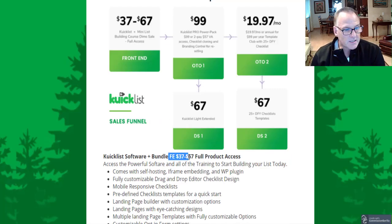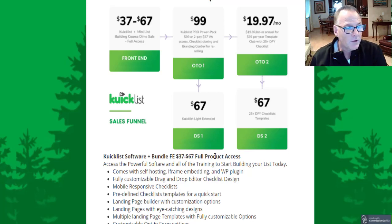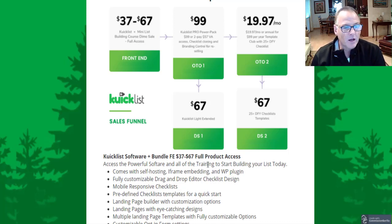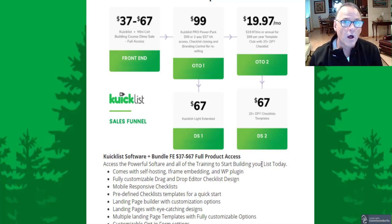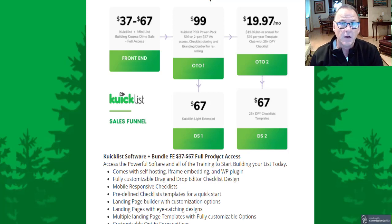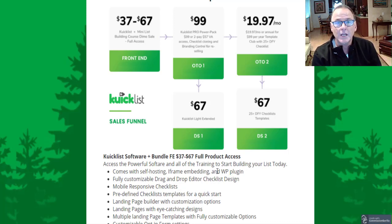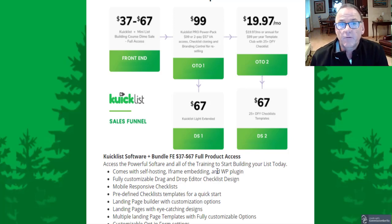The front end of Quicklist is $37 to $67 depending on when you pick it up during the launch period. You get full product access, the powerful software, all training modules, and can start building your list today. All my custom bonuses and vendor bonuses are included in the front end product — for $37 to $67, you can be building the foundation for your online business, covering everything you need to get started with email marketing, promotional marketing, and affiliate marketing.